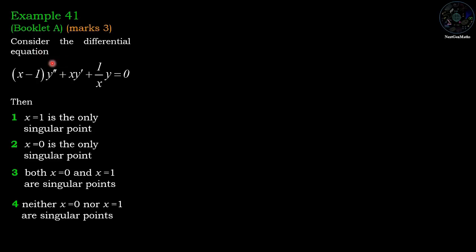Consider the differential equation (x minus 1) y'' + x y' + (1/x) y = 0. The options are: x = 1 is the only singular point; x = 0 is the only singular point; both x = 0 and x = 1 are singular points; or neither x = 0 nor x = 1 are singular points.